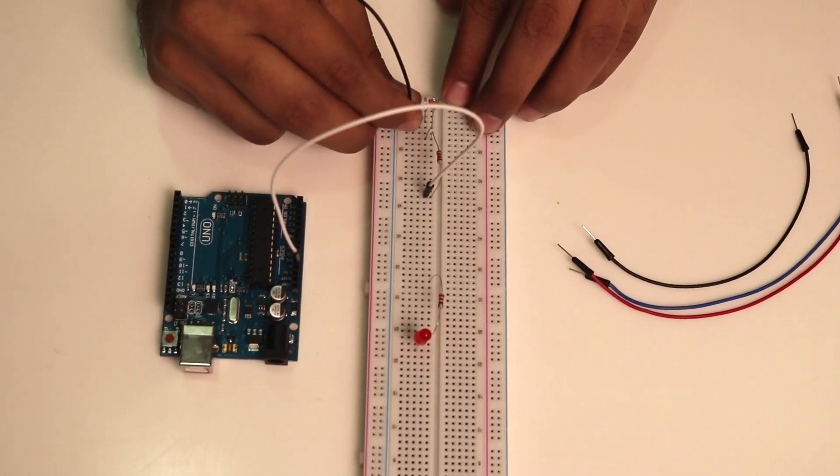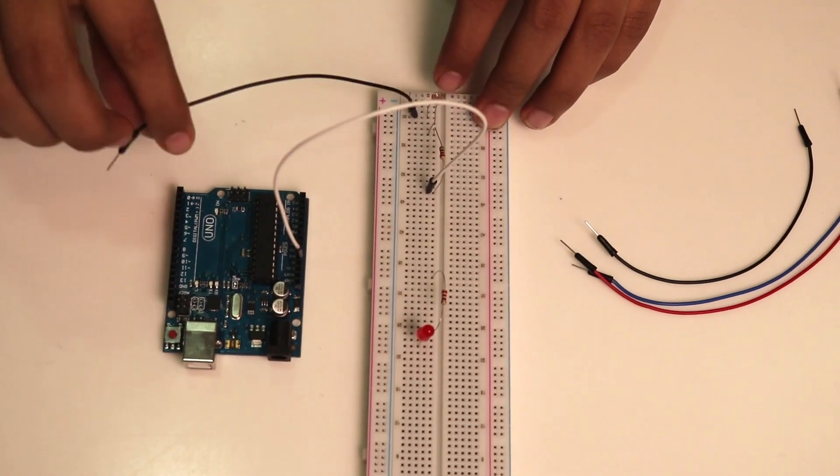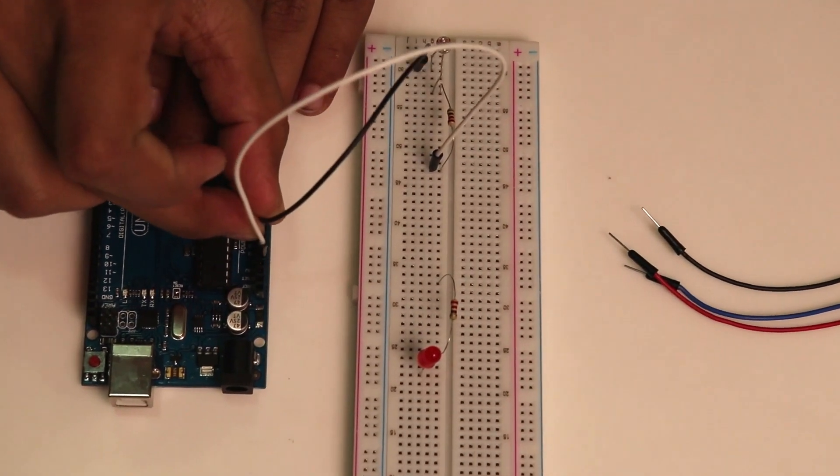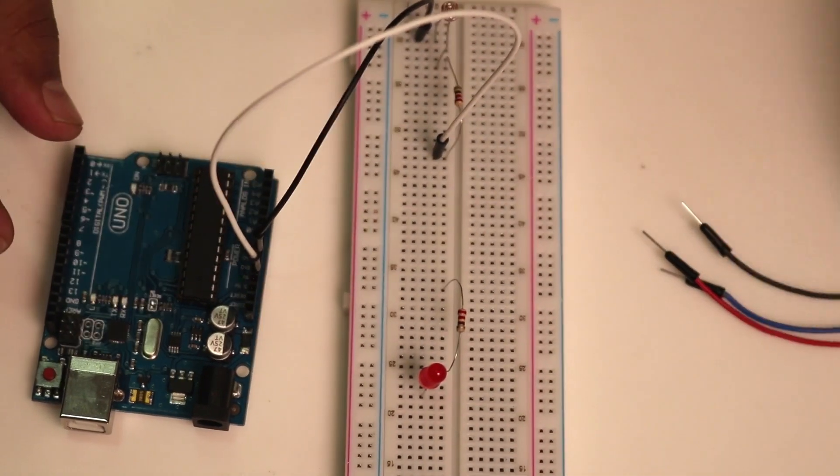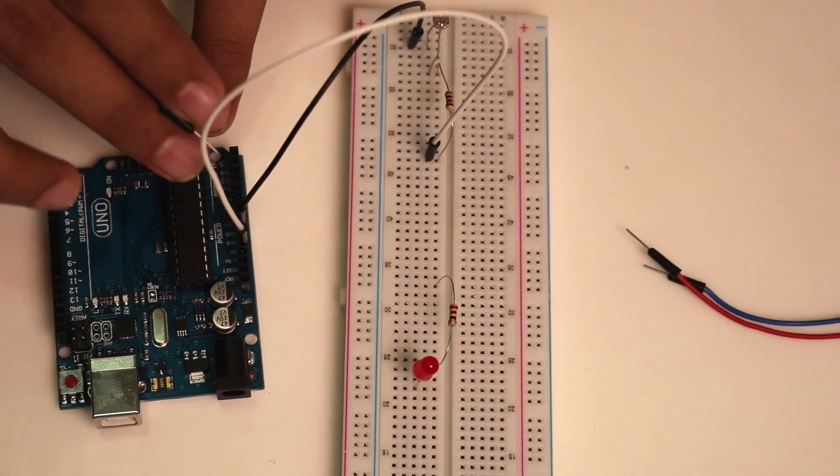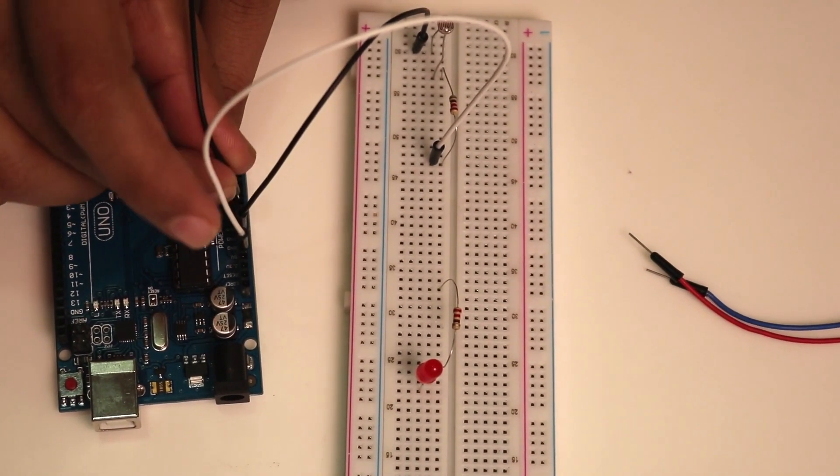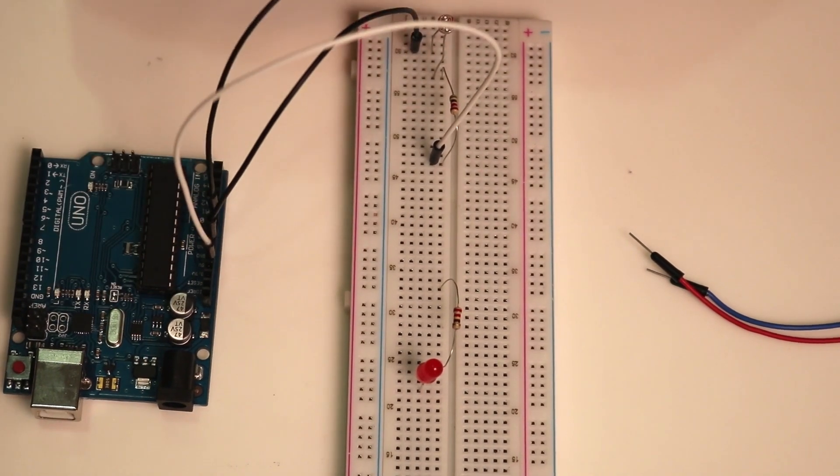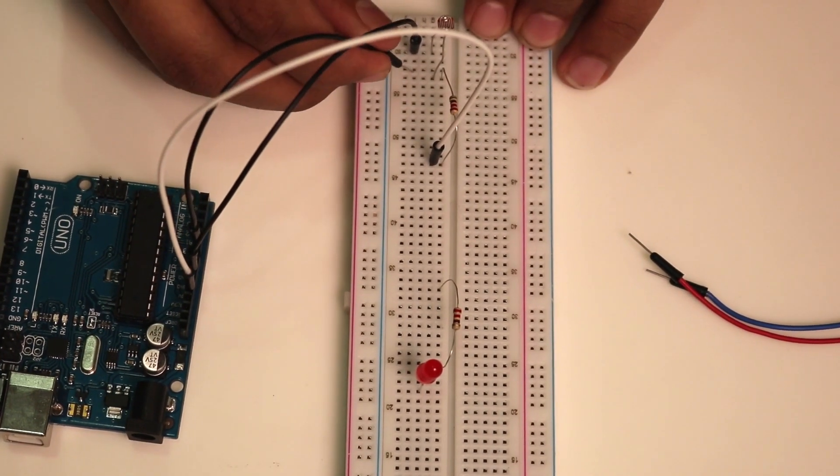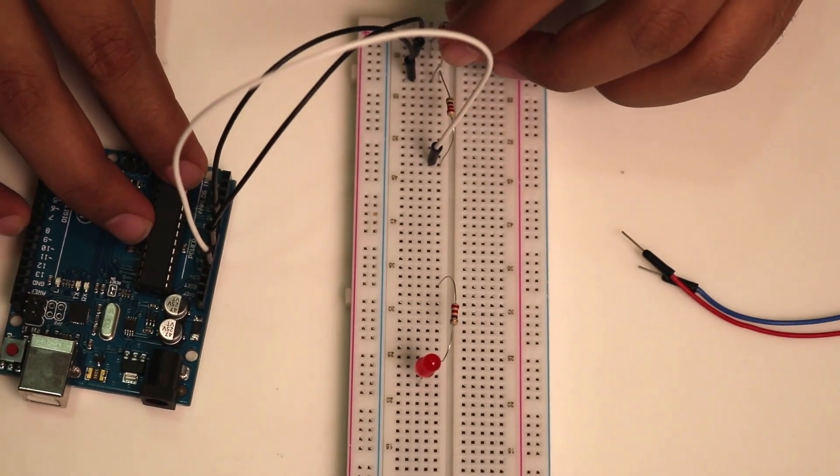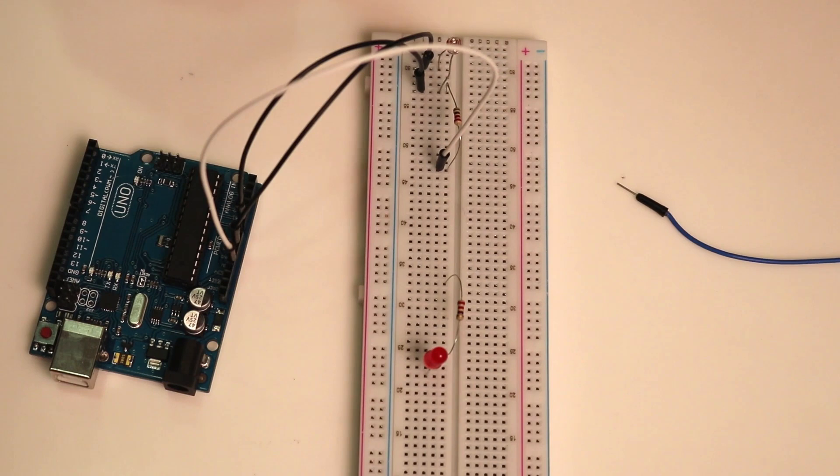Connect the ground of the photoresistor to the Arduino. Now I'm going to give the analog input, so I'm connecting it to the analog pin A0. I'm connecting the middle pin to give the analog input to the photoresistor.